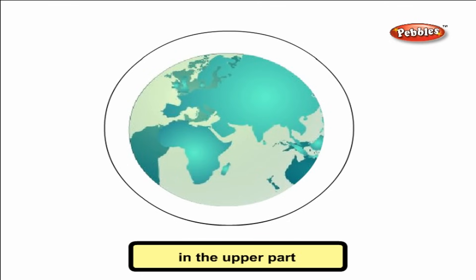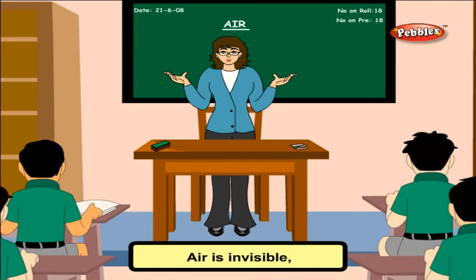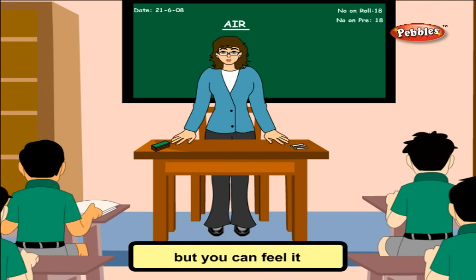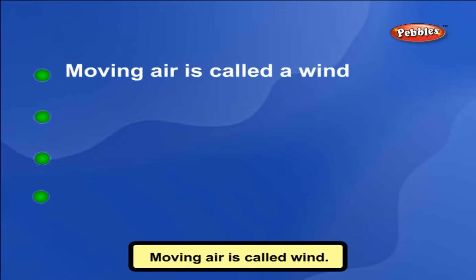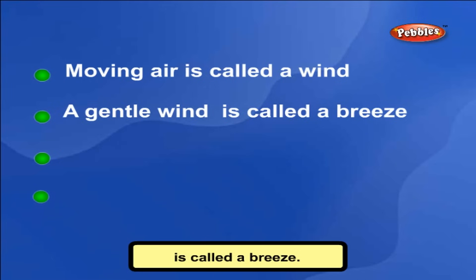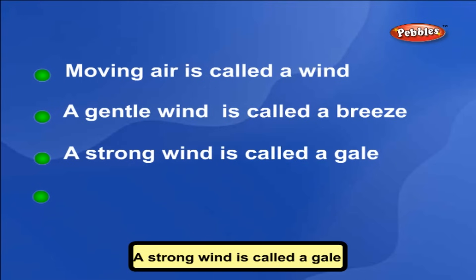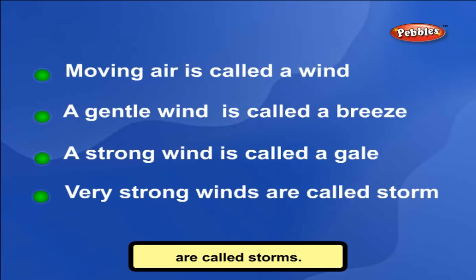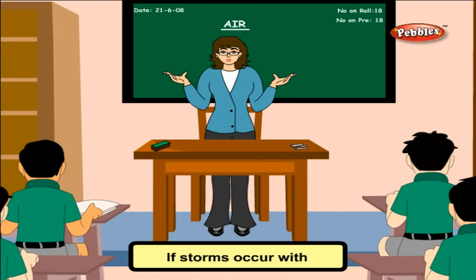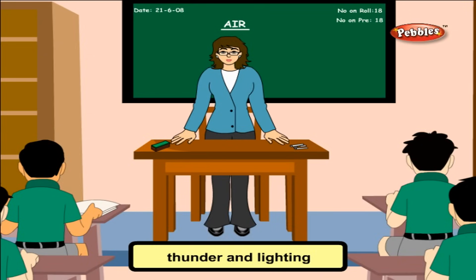The layer of ozone in the upper part of the atmosphere protects us from the sun's harmful rays. Air is invisible, but you can feel it and cannot live without it. Moving air is called wind. A gentle wind is called a breeze. A strong wind is called a gale, and very strong winds are called storms. If storms occur with thunder and lightning, they are called thunderstorms.